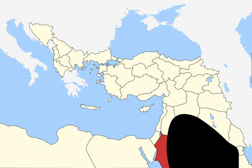1956, King Hussein sacks the British personnel in the Jordanian army, an act of Arabization to ensure the complete sovereignty of Jordan. 1958, Arab Federation of Iraq and Jordan created in February, shortly before the creation of the United Arab Republic between Egypt and Syria. It was disestablished following the 14 July Revolution in Iraq. 1965, Jordan and Saudi Arabia concluded a bilateral agreement that realigned and delimited the boundary, resulting in some exchange of territory, allowing Jordan to expand its port facilities at Aqaba and protecting the pasturage and watering rights of certain nomadic tribes.